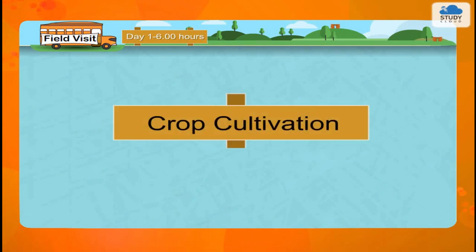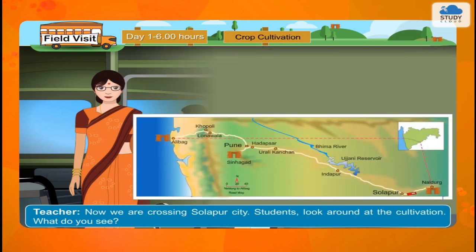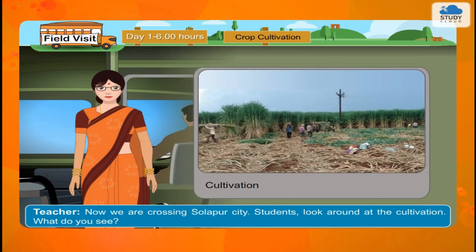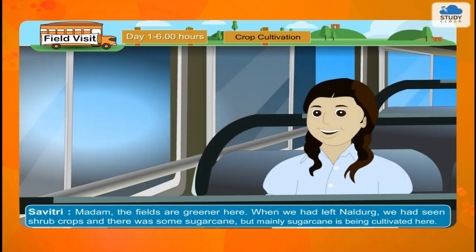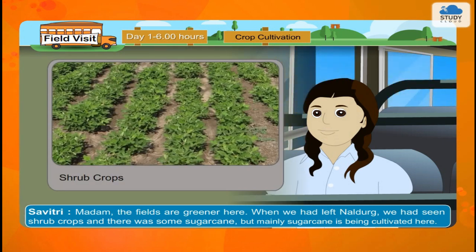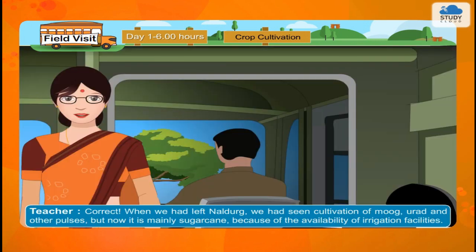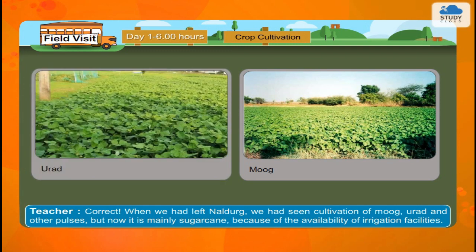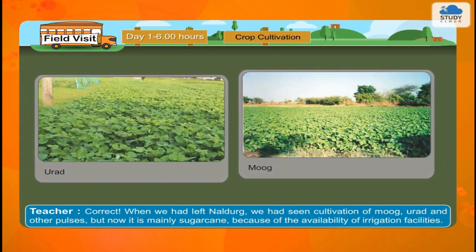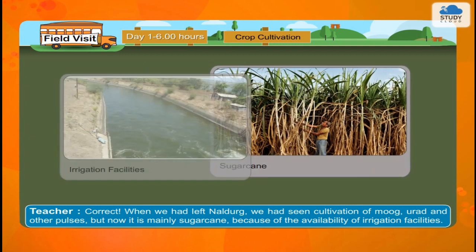Crop Cultivation. Teacher: Now we are crossing Solapur city. Students, look around at the cultivation. What do you see? Savitri: Madam, the fields are greener here. When we had left Naldurk, we had seen shrub crops and there was some sugarcane. But mainly sugarcane is being cultivated here. Teacher: Correct. When we had left Naldurk, we had seen cultivation of moong, urad and other pulses. But now it is mainly sugarcane because of the availability of irrigation facilities.